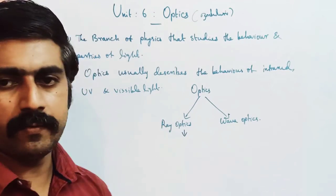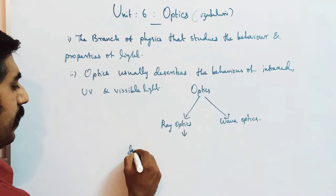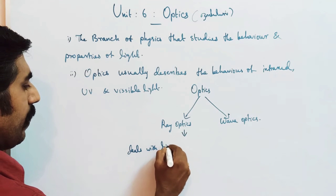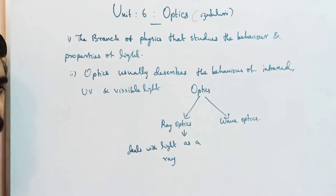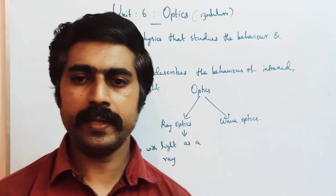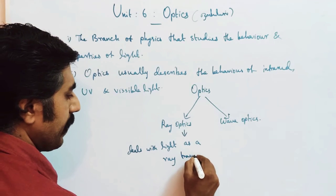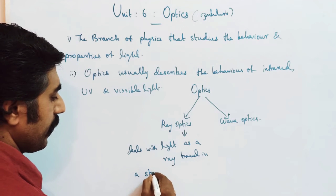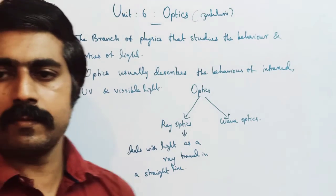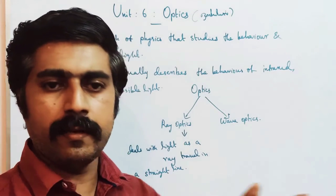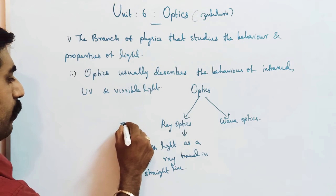Light as a ray — we consider light to travel in a straight line, without any disturbance, without any deviation. So you can say ray optics.